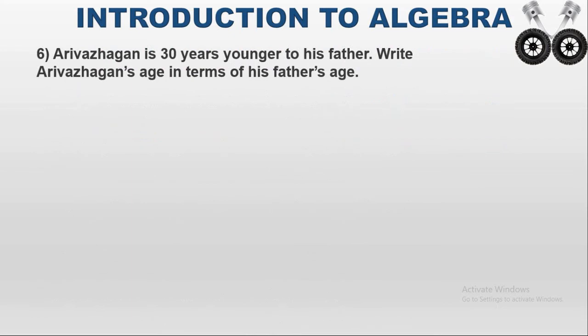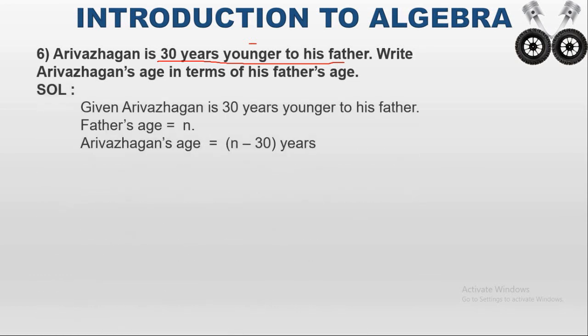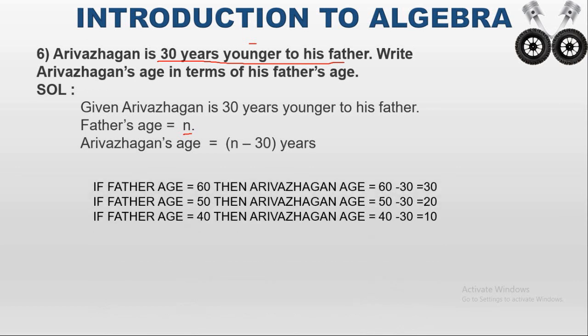Question number 6: Arivarakhan is 30 years younger than his father. Write Arivarakhan's age in terms of his father's age. We don't know the father's age, but the condition is that Arivarakhan is 30 years lesser than the father's age. Since it is lesser, we subtract. We take the father's age as the variable n because the value is unknown.